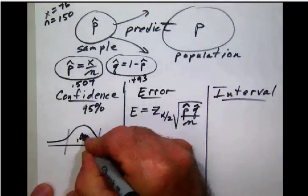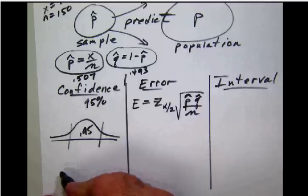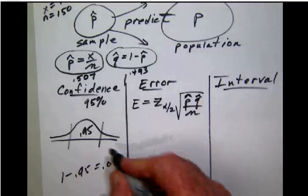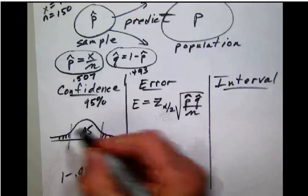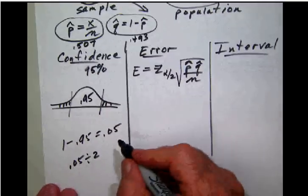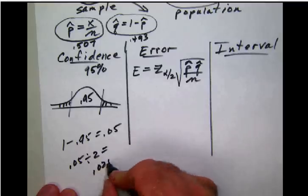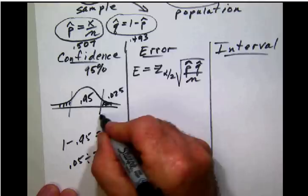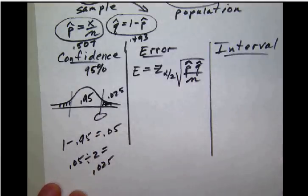We take that out of the middle of our distribution. Of course, if we are 95 percent sure, then we must be 5 percent unsure. Of course, we're going to divide that up into our two parts. So 0.05 divided by 2 is 0.025, which is this area under the curve 0.05 to the right of our unknown z alpha over 2 score.